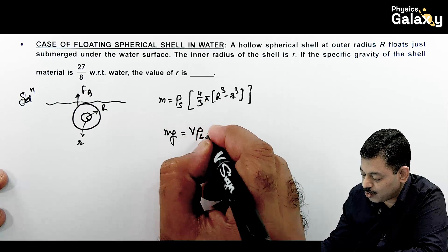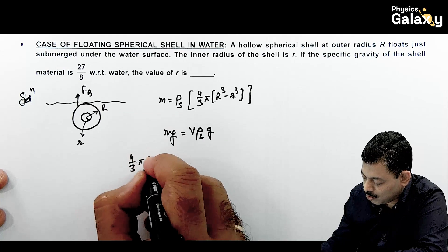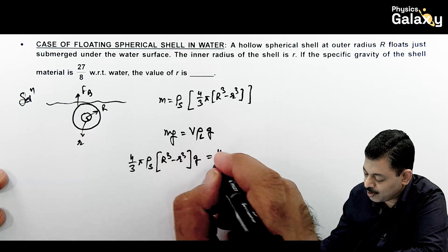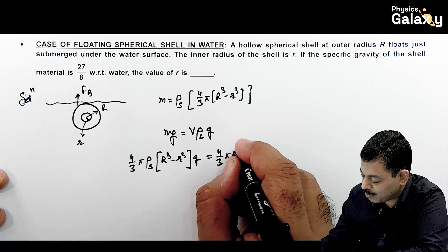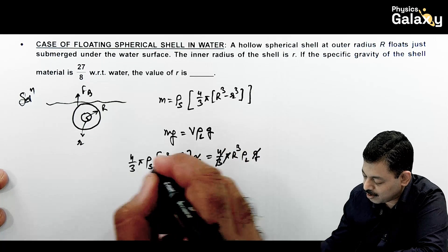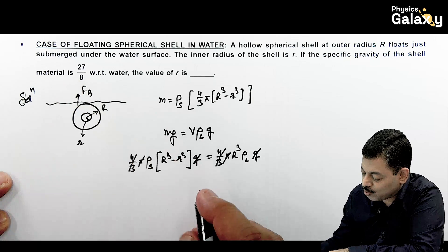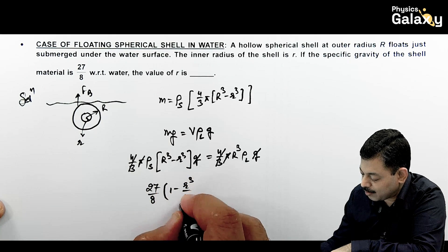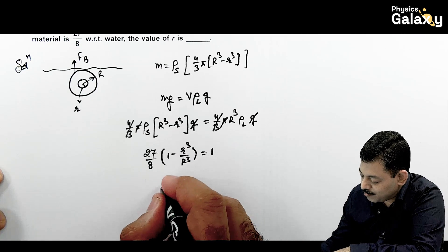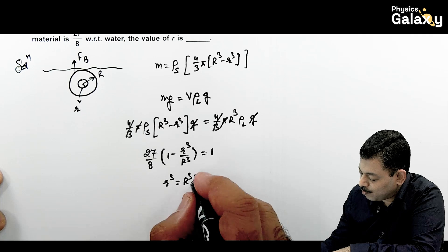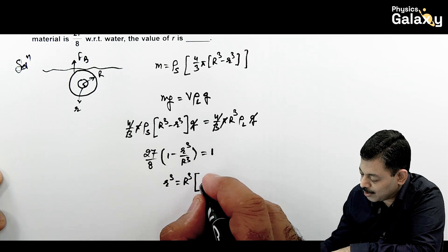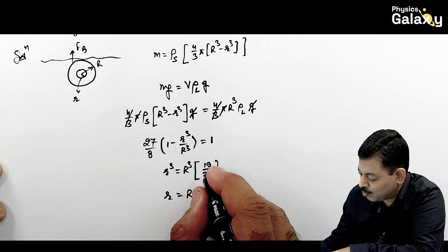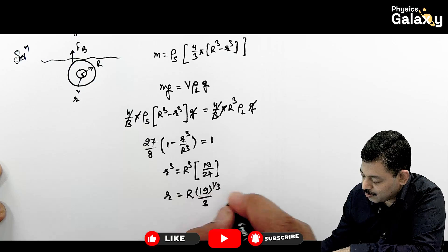Setting mg = V·ρ_liquid·g: (4/3)π·ρ_solid·(R³ - r³) = (4/3)π·R³·ρ_liquid. After cancelling terms, ρ_solid/ρ_liquid = 27/8. This gives 1 - r³/R³ = 8/27, so r³/R³ = 1 - 8/27 = 19/27. Therefore, small r = R·∛(19/27) = R·∛19/3. That is the answer to this problem.